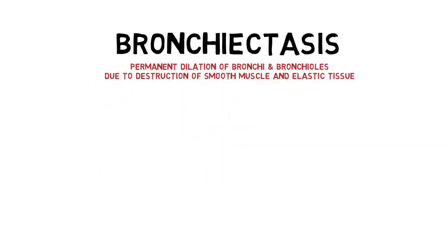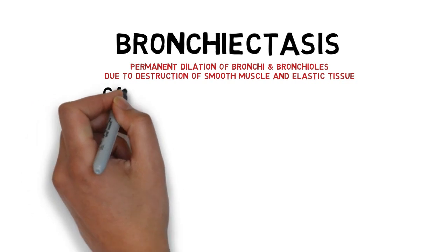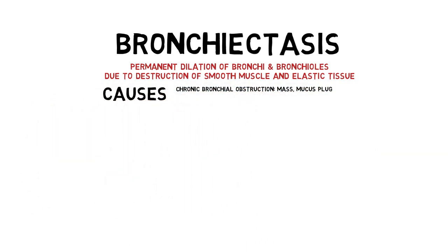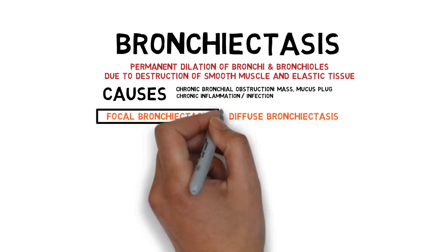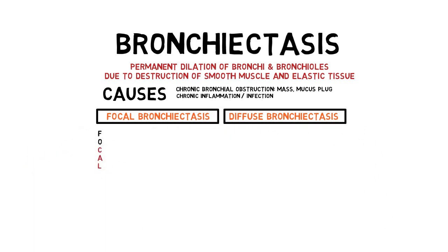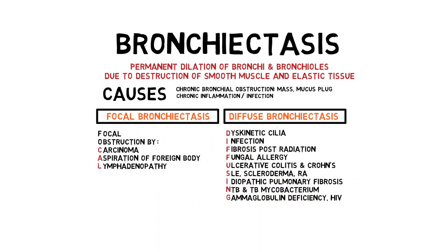Next, bronchiectasis is the permanent dilation of bronchi and bronchioles due to destruction of the structural components — smooth muscle and elastic tissue. The underlying causes are generally chronic bronchial obstruction by mass or mucus plug, chronic inflammation or infection, or both. Bronchiectasis can be focal or diffuse. Focal is usually due to obstruction by solid tumor, foreign body, or massive lymphadenopathy. Diffuse causes include dyskinetic or immotile cilia diseases such as cystic fibrosis and Kartagener syndrome, where pooling of mucus plugs leads to diffuse bronchial obstruction. Recurrent or single severe pneumonia can also cause bronchiectasis.